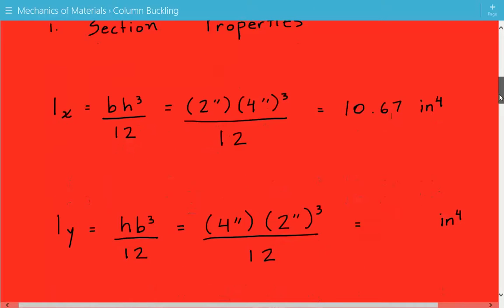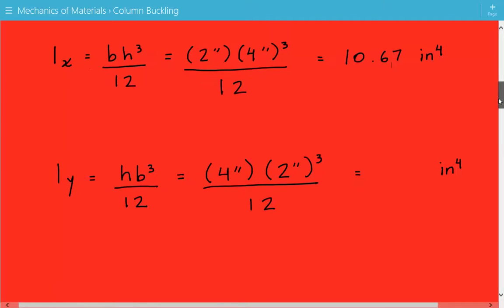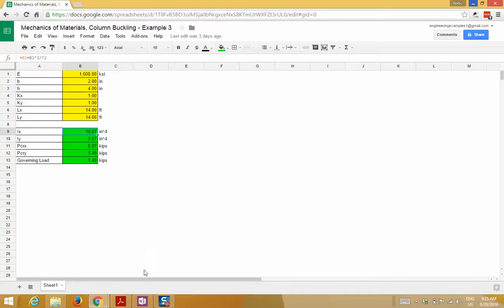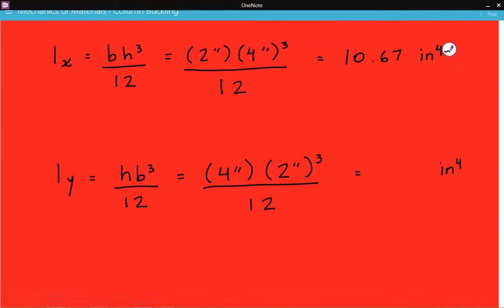Now we're going to calculate the moment of inertia about the y axis. It's equal to hb cubed over 12, and that's equal to 2.67 inches to the 4th power.